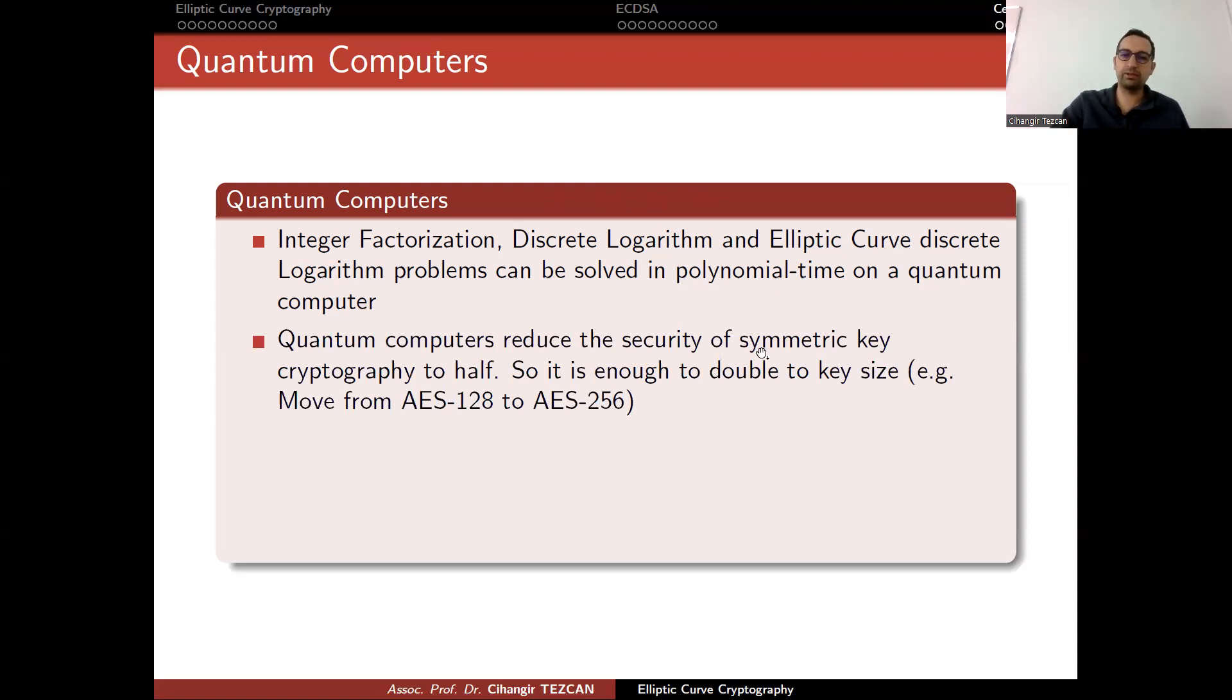Quantum computers reduce the security of symmetric key cryptography to half, so it is enough to double the key size. For example, you can move from AES-128 to AES-256 to avoid attacks from quantum computers. But reducing the security by half might not be that much of a problem because quantum computers can break AES-128 by performing 2 to the 64 operations. But performing 2 to the 64 operations will be on quantum computers, not classical computers. We don't know if we would have such quantum computers anyway. This is why generally we don't care much about symmetric key cryptography or finding hash collisions with quantum computers.